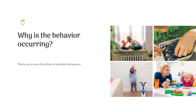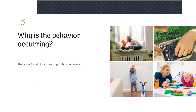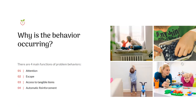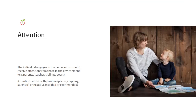So why is the behavior occurring? There are four main functions of behavior. One is for attention, two is for escape, three is for access to tangible items, and four is automatic reinforcement. For attention, the individual engages in the behavior in order to receive attention from those in the environment — parents, teachers, siblings, peers.